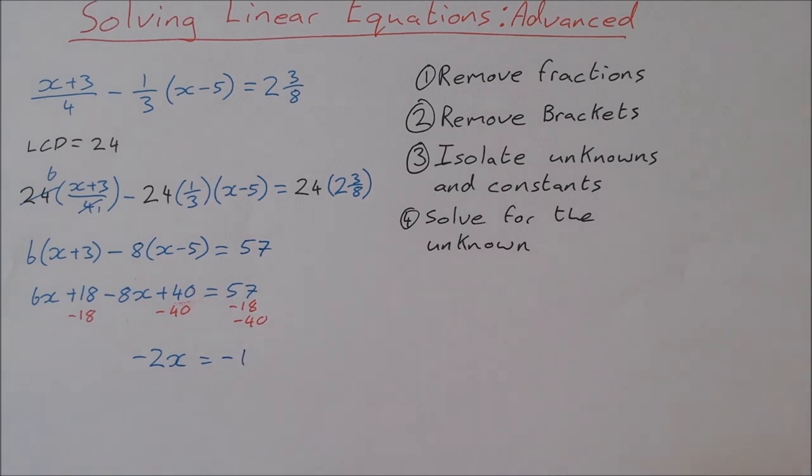So I have -2x = -1. I divide both sides by -2, and I end up getting x = 1/2.